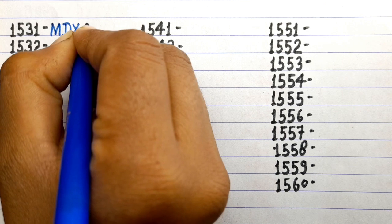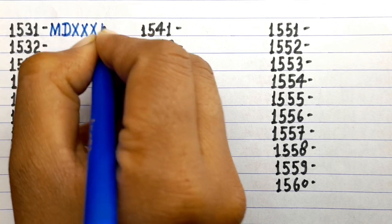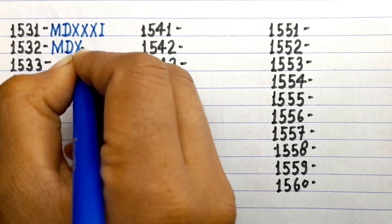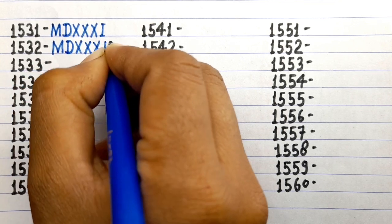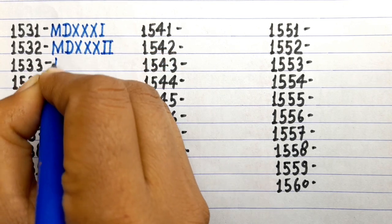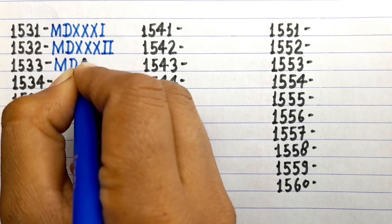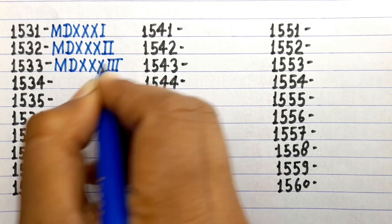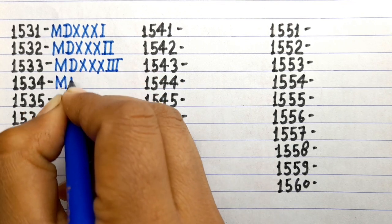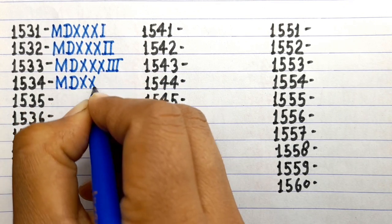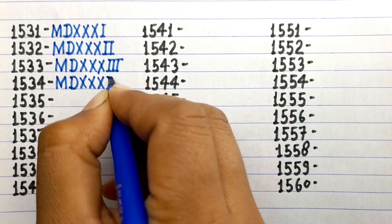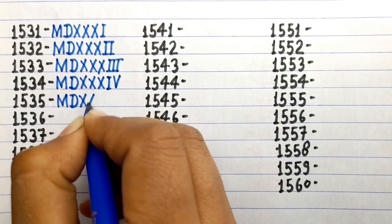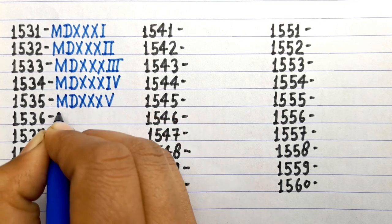1531 MDXXXI, 1532 MDXXXII, 1533 MDXXXIII, 1534 MDXXXIV, 1535 MDXXXV.